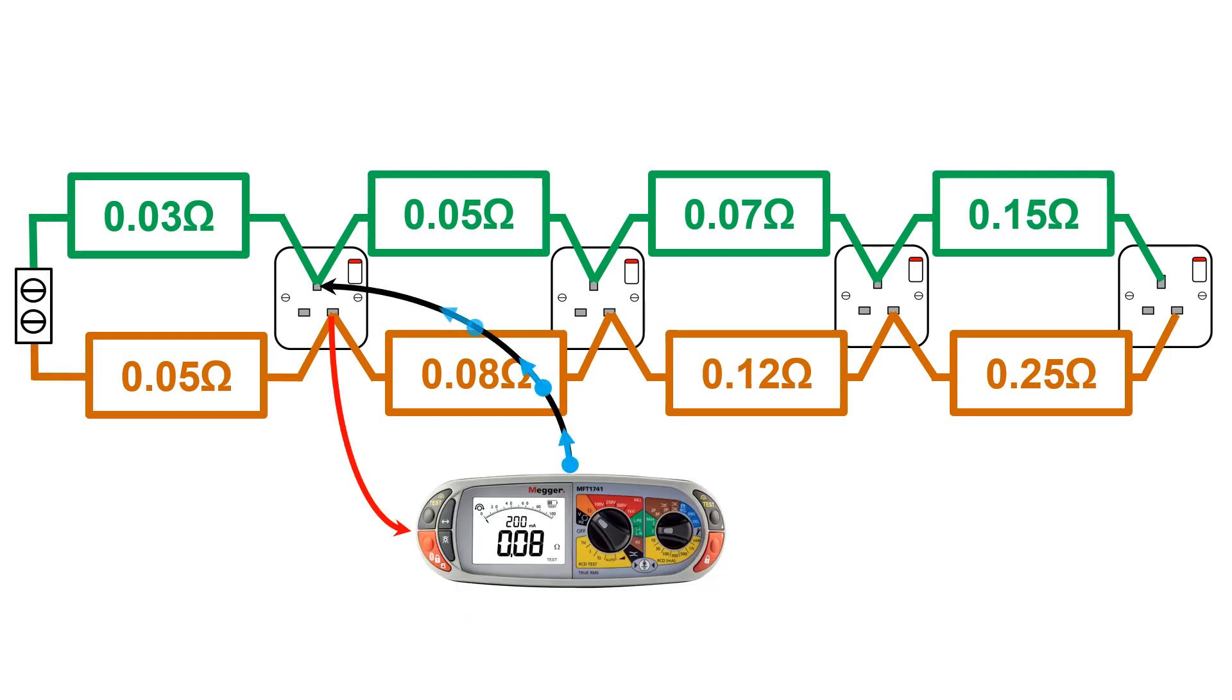To test R1 and R2 together for ease and to save time, we connect the two conductors together into a connector block at the supply end of the cable and then test between R1 and R2 at each point, operating the switches on accessories as we go to proof functional switching and moving downstream in the circuit until we find the highest resistance. This may or may not be the furthest point because we should never assume for obvious reasons, like a faulty socket, for example.